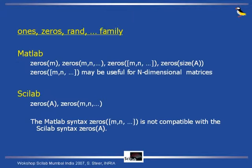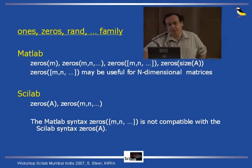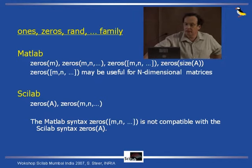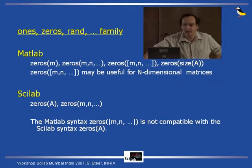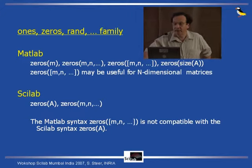A second class of functions that pose problems is the zeros, ones, round, and similar functions. In MATLAB, you have zeros(M) which builds a matrix full of zeros of size M-by-M, and zeros(M, N) which builds a matrix with M rows and N columns. And if you want to build a matrix of zeros with the same size as A, you write zeros(size(A)). This syntax is also useful for N-dimensional matrices where the number of dimensions is not fixed.